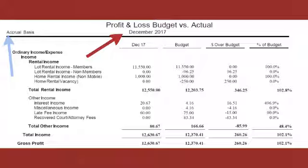I've just taken out this chunk of income to take a closer look at lot rent income — members and non-members. Looks like this co-op might be charging a different amount, which is why they've broken that out like that.